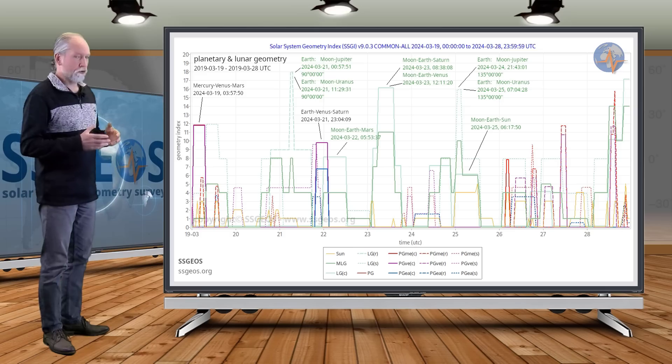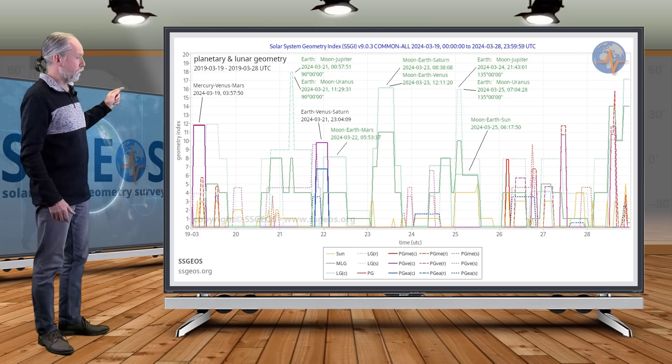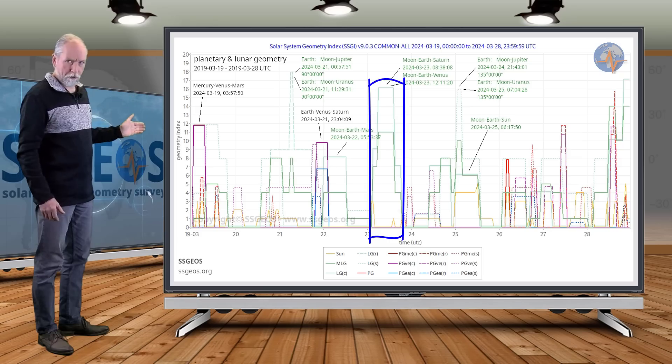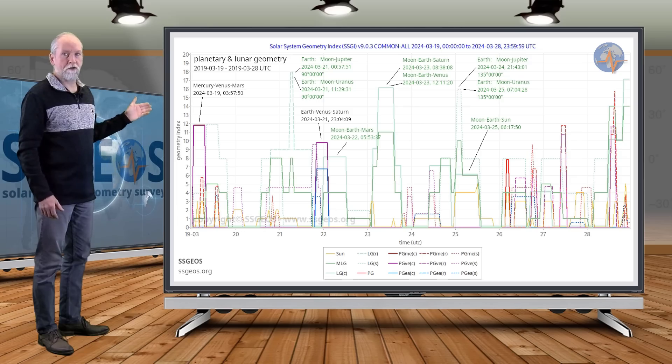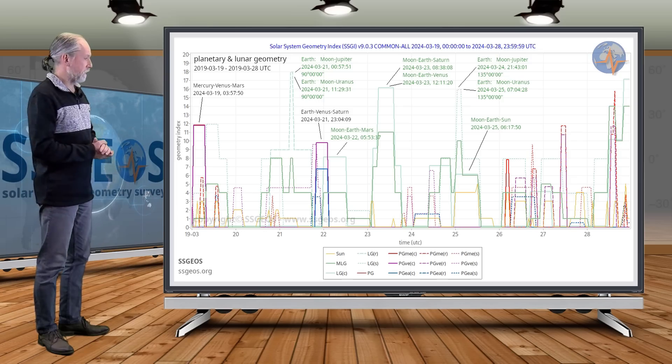Not too critical except possibly for the conjunctions on the 23rd with Venus and Saturn. There can be a seismic response there, strong seismic activity as a result.